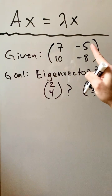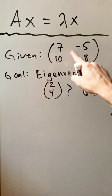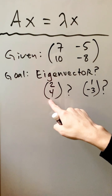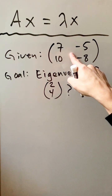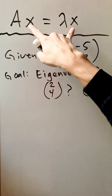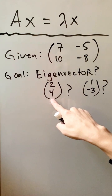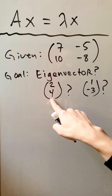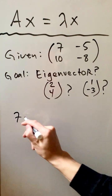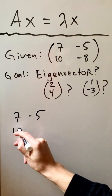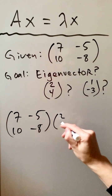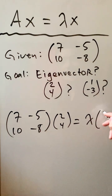Let's look at the situation where you have a matrix and a vector, and the question is: is this vector an eigenvector of this matrix? Let's create this equation, going in for A with the given matrix and going in for both x's with the given vector we're testing. Lambda stays lambda.